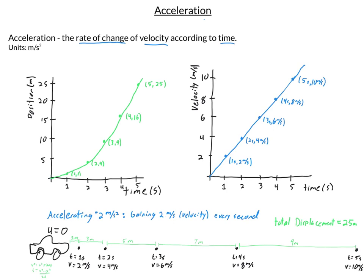Many interesting things come from our velocity-time graph. If I graph out how fast we were going each second — after one second we were going 2 meters per second — with each passing second we increase velocity by 2 meters per second. With an acceleration of 2 meters per second squared, I get a nice linear graph. If you remember from the constant velocity video, the rate of change means the slope, so acceleration is the slope of a velocity-time graph.